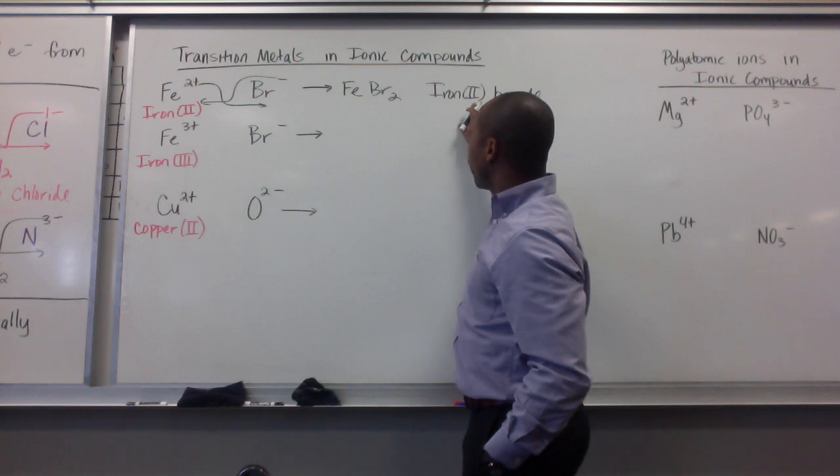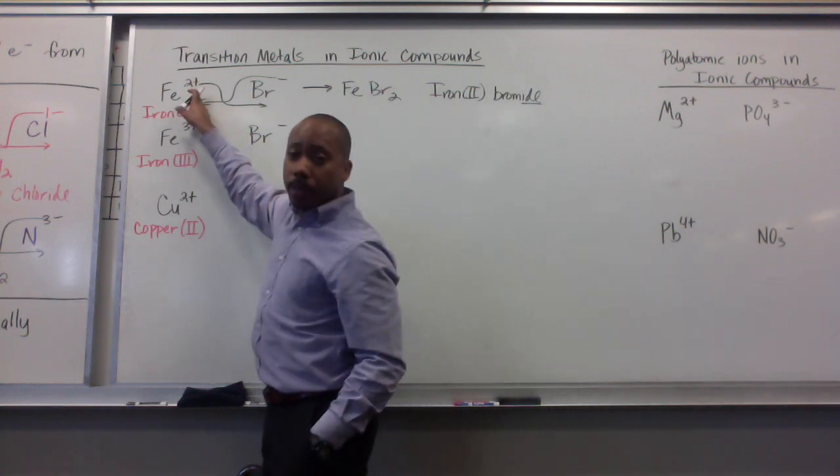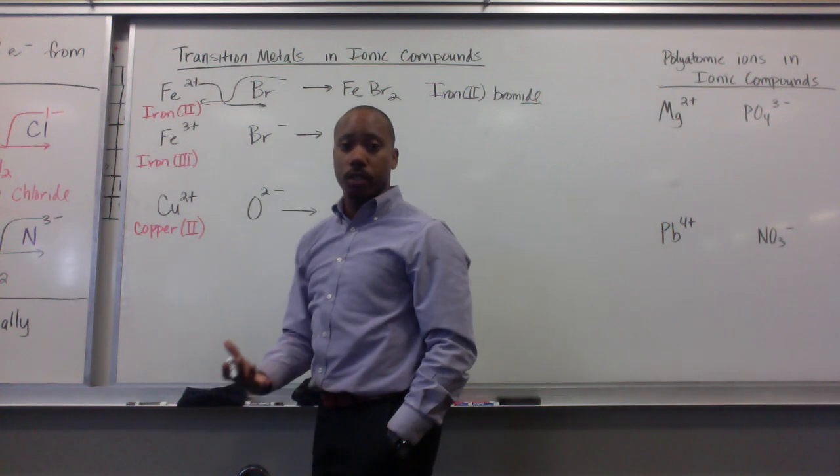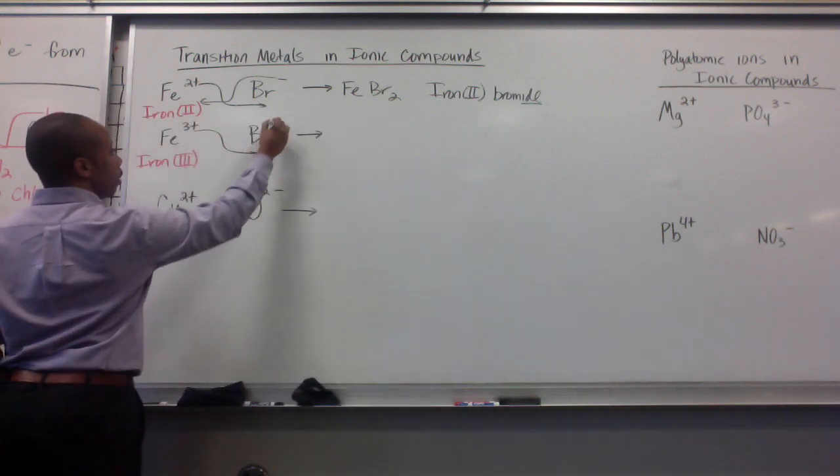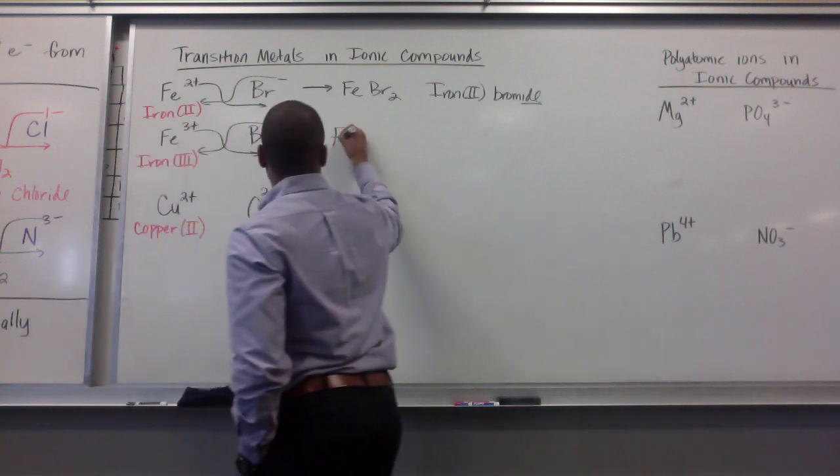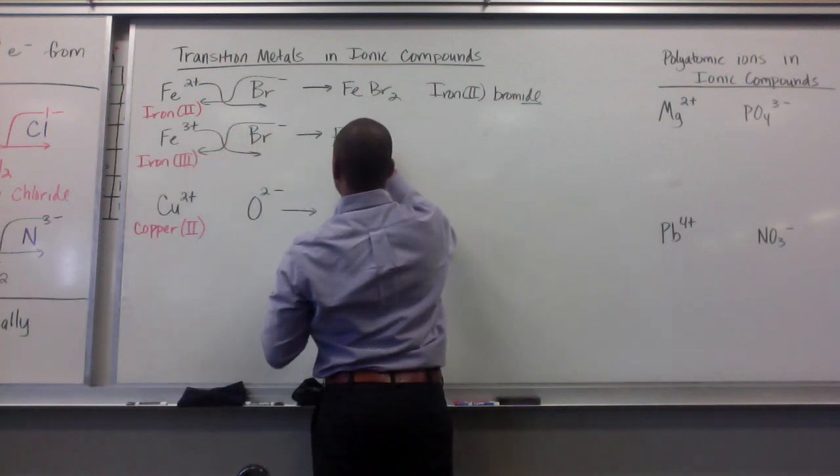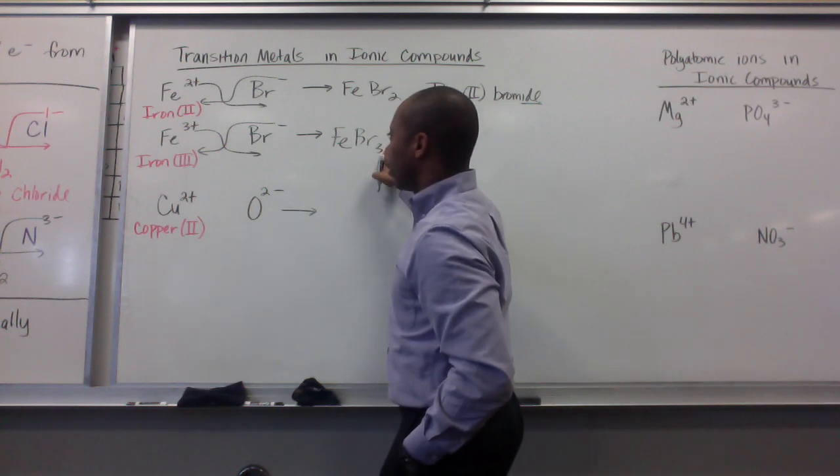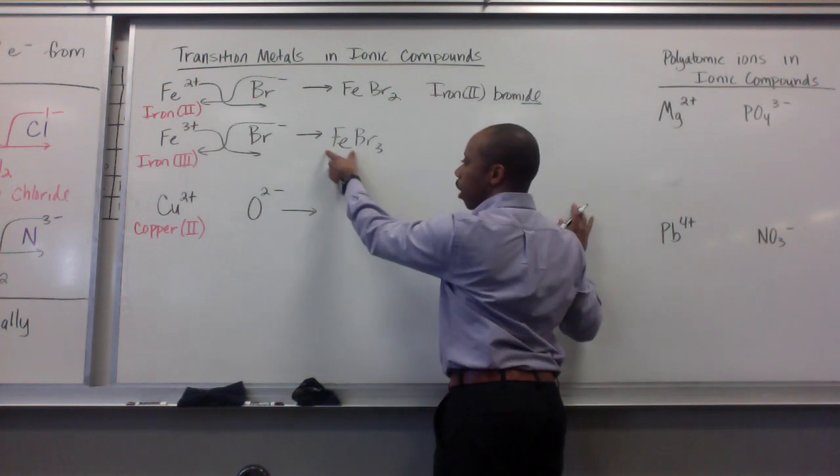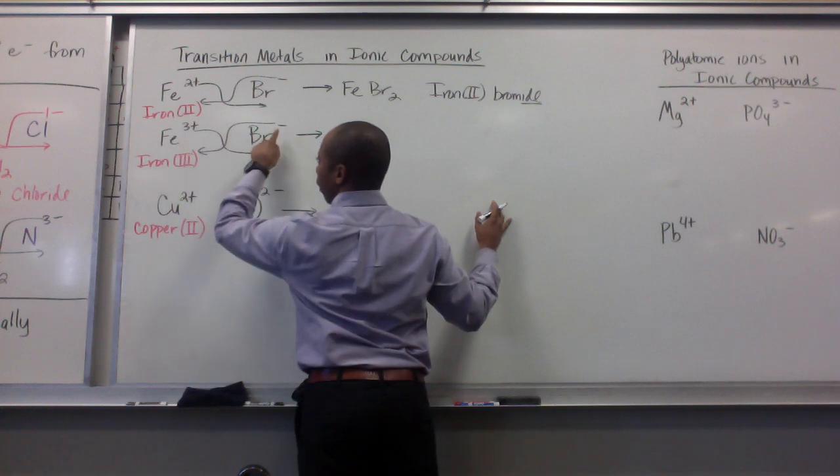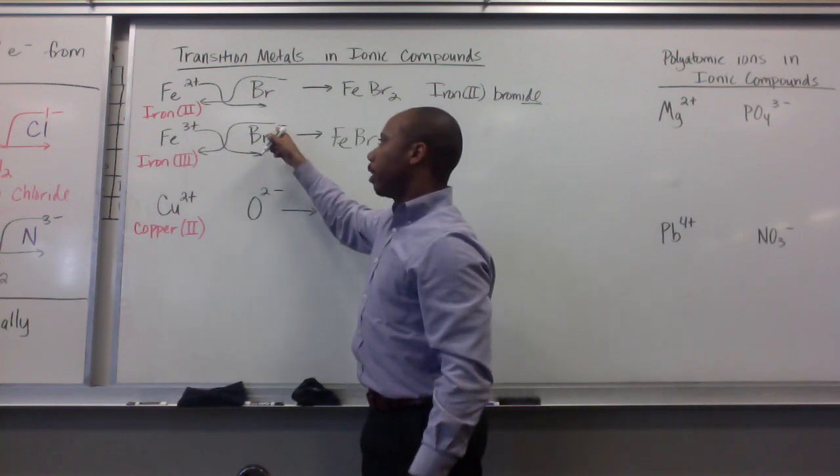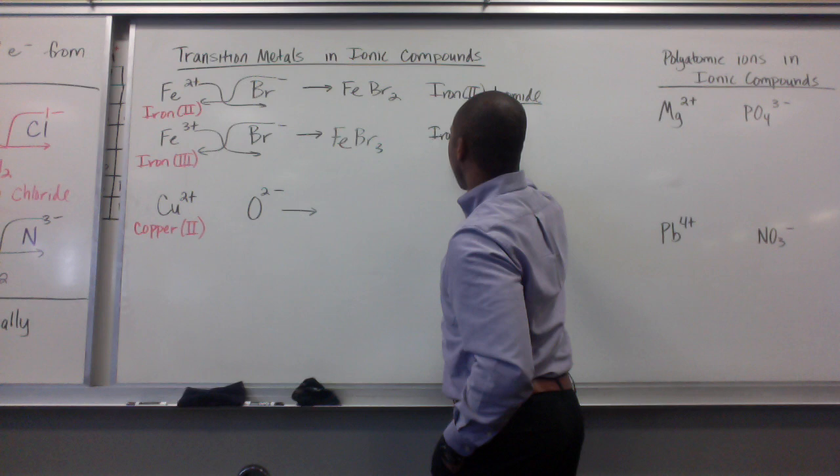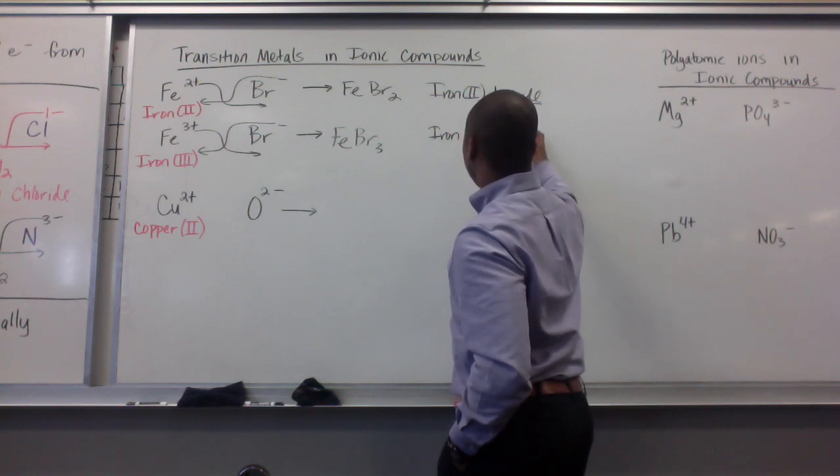We have to put the Roman numeral 2 here because iron will not always be 2 plus. Sometimes it may be a 3 plus charge depending on the situation. If I do the crossover method here, I have Fe getting the 1 here. I don't write the 1. Then Br getting the 3 here. So it takes 3 bromine atoms to satisfy 1 iron if these are their charges. I need 3 of these 1 minuses to balance out that 3 plus. And when I write the name, it's iron(III) bromide.